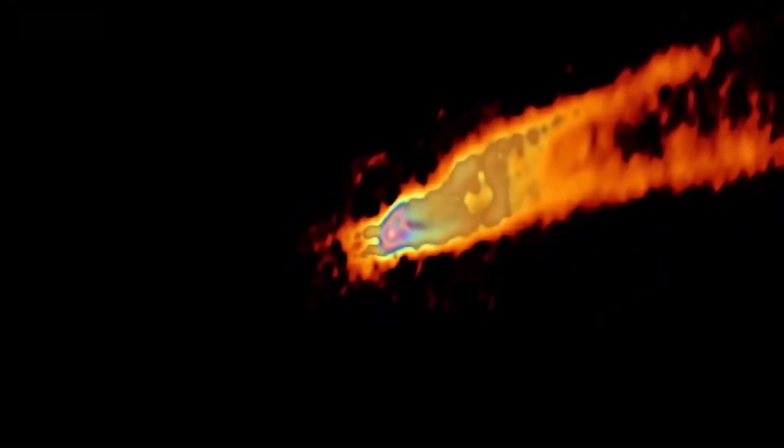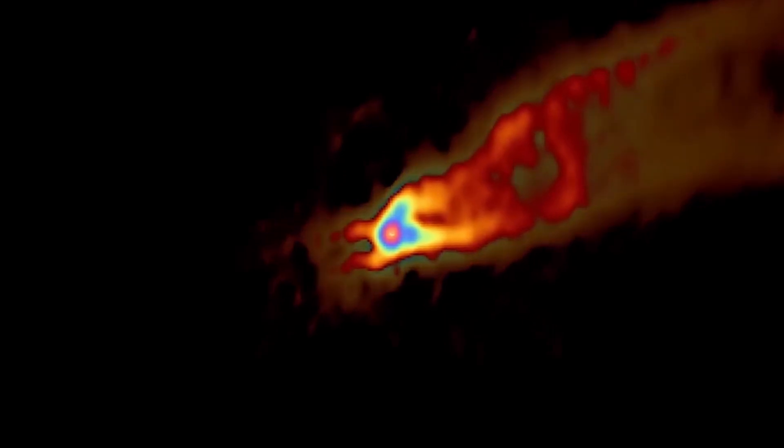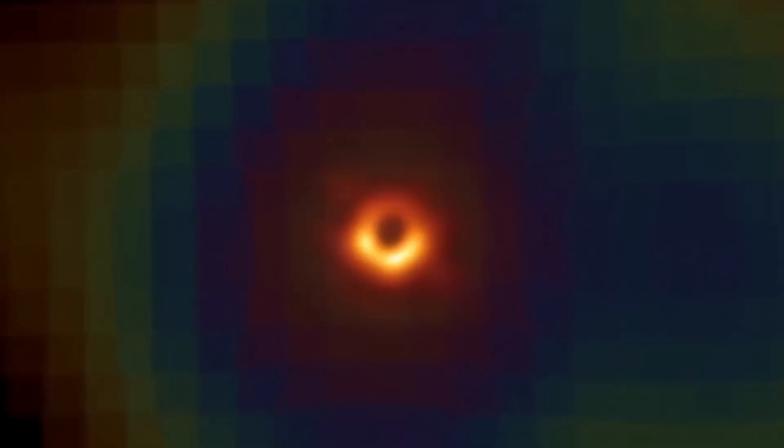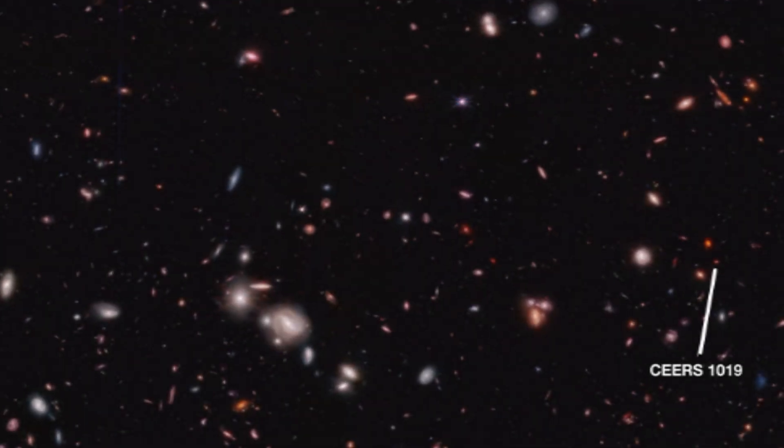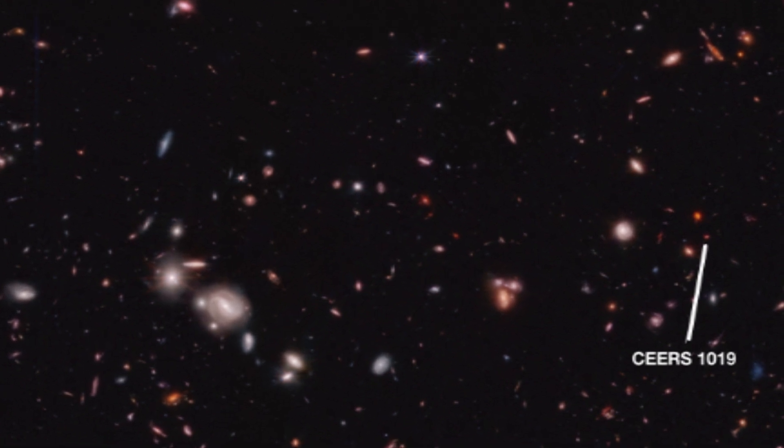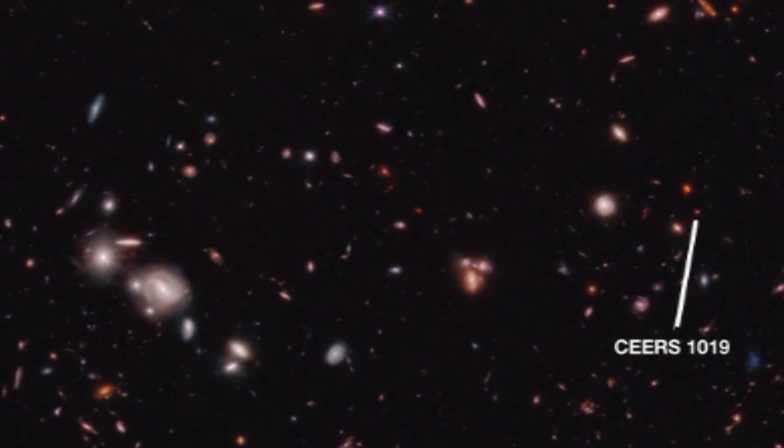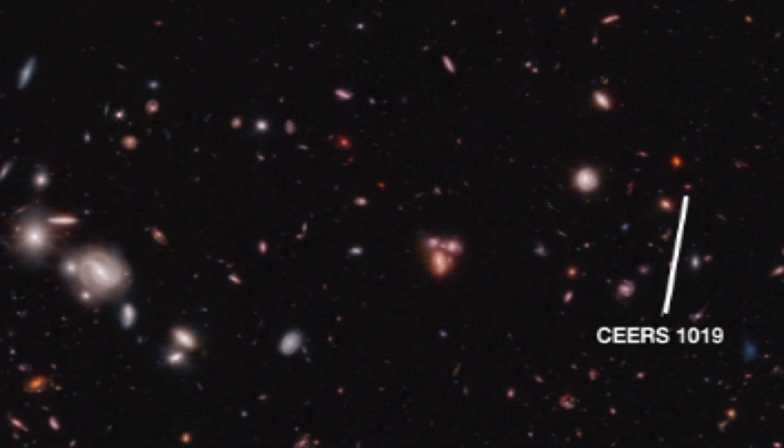The researchers carried out this observation in the galaxy that hosts this active supermassive black hole as part of the CEERS Cosmic Evolution Science Survey. This galaxy, called CEERS 1019, is observed as it was when the universe was 13.8 billion years old.